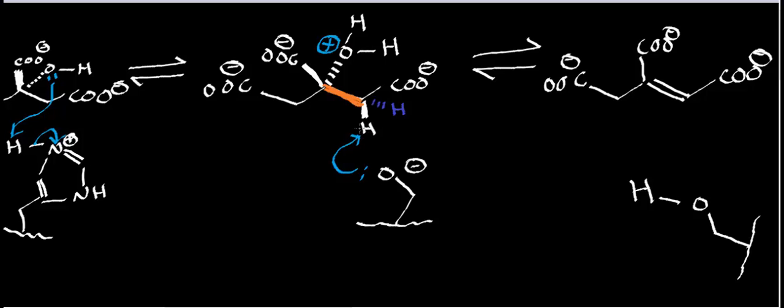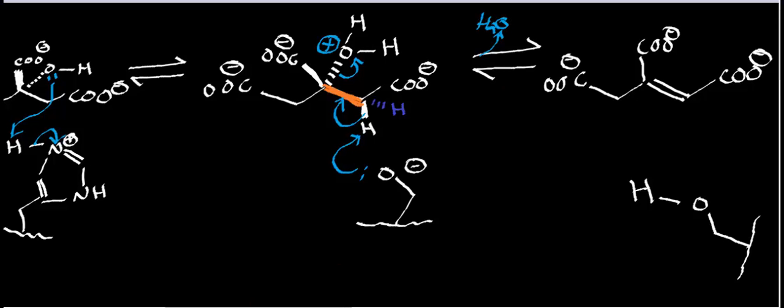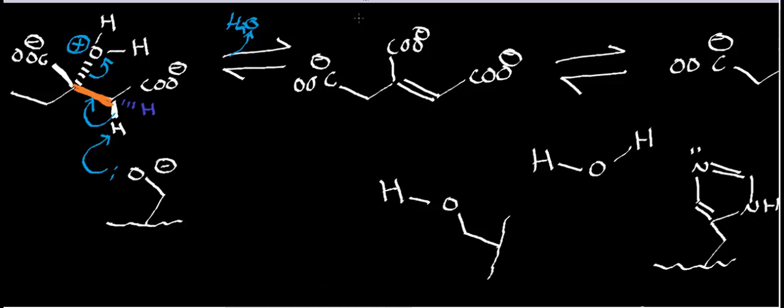So the serine alkoxide deprotonates here, and you generate the alkene with the loss of the leaving group, right? And so in this step of the mechanism, you end up losing H2O. You end up losing water. And in the process, you generate this intermediate of aconitase called cis-aconitate. And the reason it's called cis-aconitate is because, number one, it's aconitate, but also because these two carboxyl groups happen to be cis to each other.